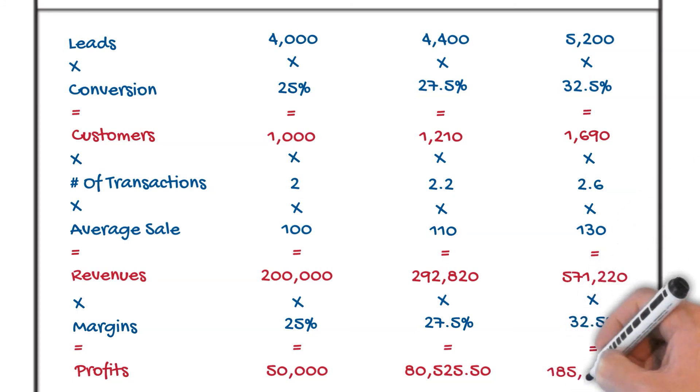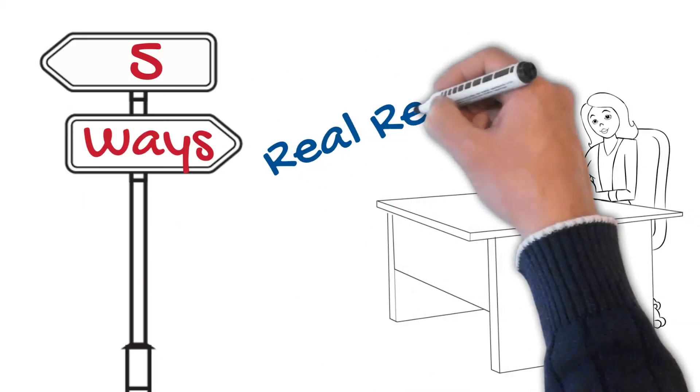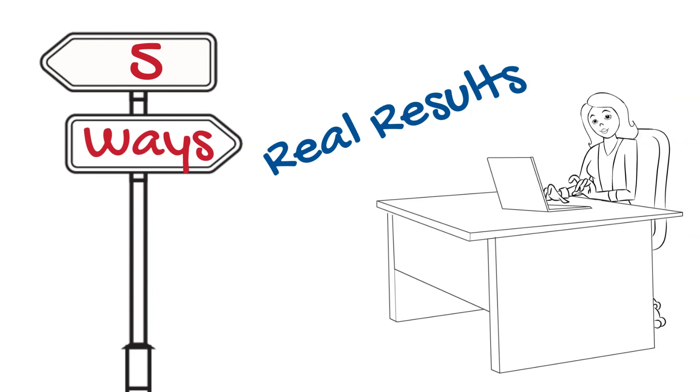Now, you might get 10% in one area, 20% in another, 30% in another, or even larger. Here we go, $185,000. The five ways, it's real results for you, real results for you to grow your business.